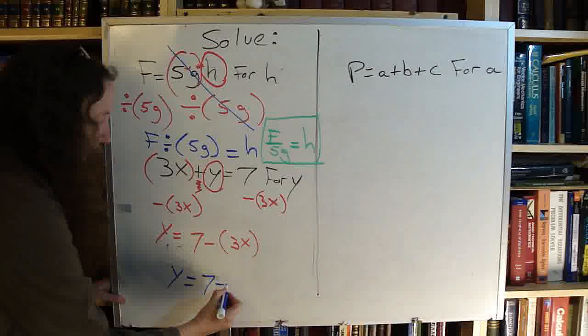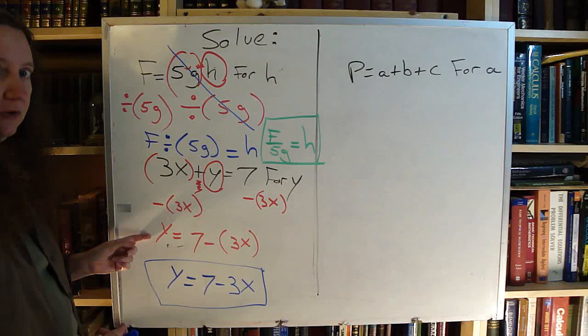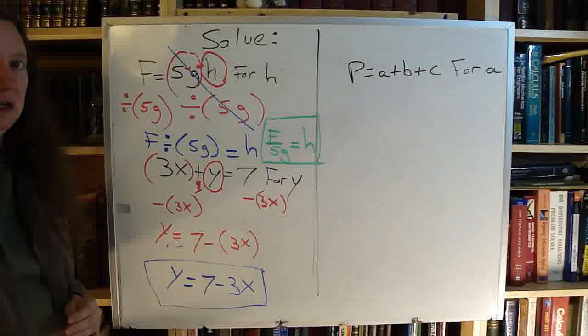So my actual answer down here is y equals 7 minus 3x. No parenthesis. It's not wrong if you have the parenthesis in there. That is okay. But it's not as simple as it can get.